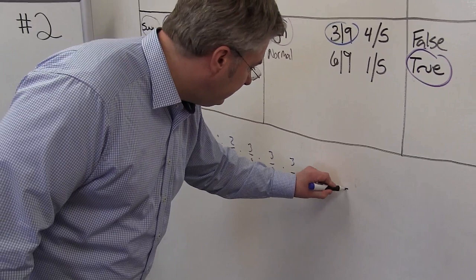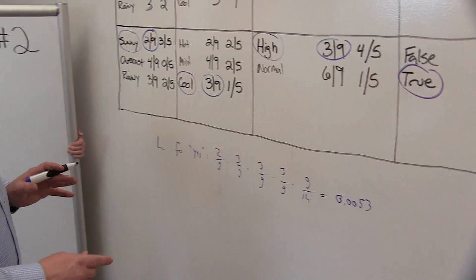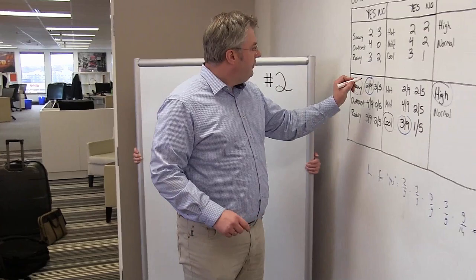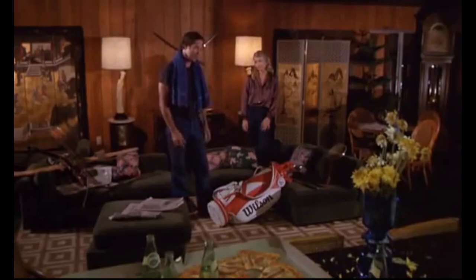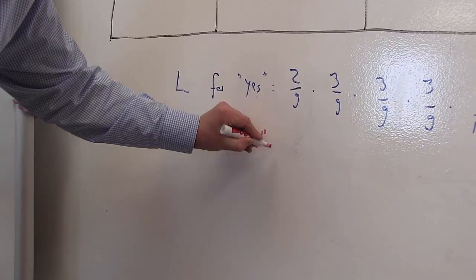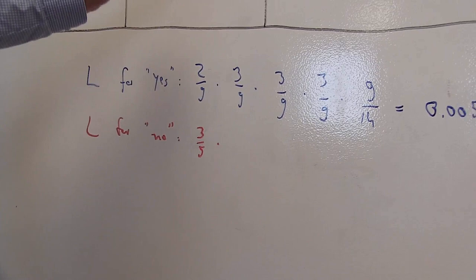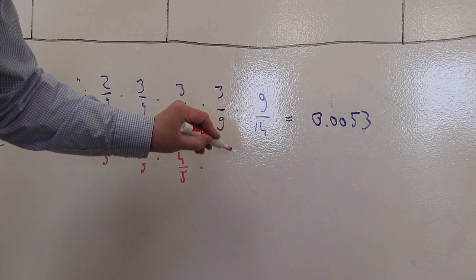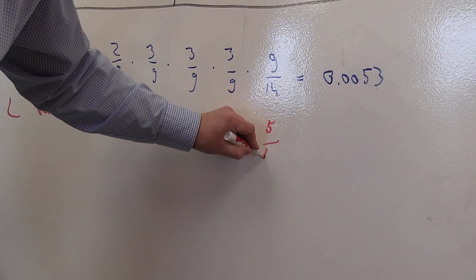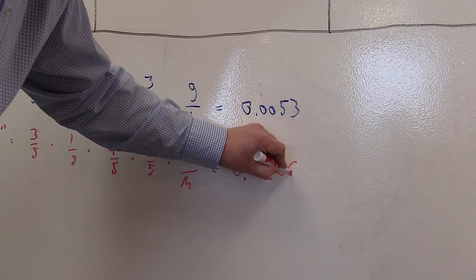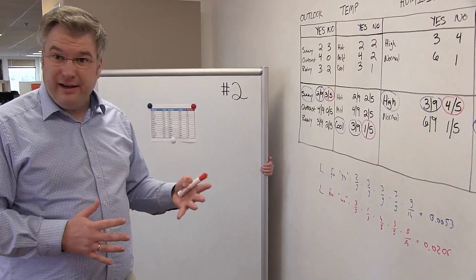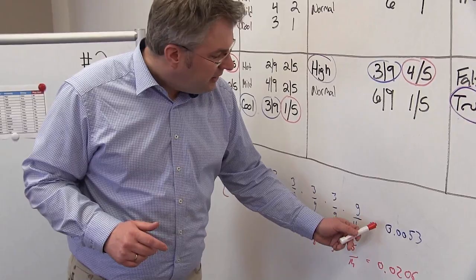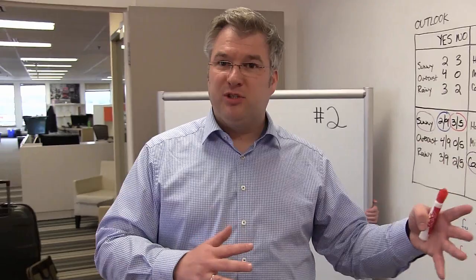And now we can do the same thing also for no. In this case, we just look at the other combinations here. We take those probabilities and multiply them up. So the likelihood for no is 3/5, multiply it with 1/5, then 4/5, then 3/5, and finally 5 divided by 14. And that is a little bit higher — that's 0.0206. So if I only have those two numbers, my decision is clear: the likelihood for no is higher. By the way, if you want to transform this into probabilities, you can divide those two numbers by their sum, and you end up with roughly a 30% probability versus a 70% probability. So this is the basic idea of Naive Bayes and how to use it for creating predictions.